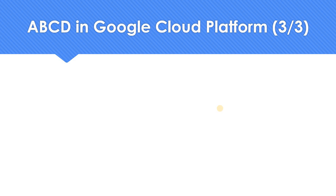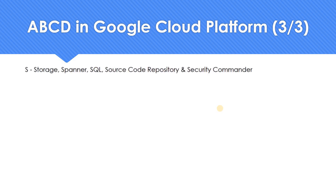S has a good amount of products. Storage — the most favorite product for me, where you stage data in your storage buckets. Spanner — one of the more expensive products, but you get a very cool feature: a horizontally scalable database, great for mission-critical applications. SQL — where you get MySQL, PostgreSQL, and Microsoft SQL Server as a managed service. Cloud Source Repository — a private Git for committing and keeping your source code. And Security Command Center. Just like in English, you can give a huge number of options for S.